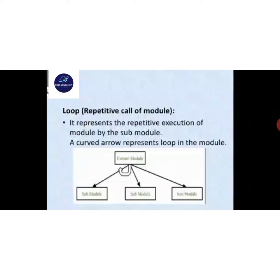A loop represents the repetitive call of a module — the repetitive execution of a module by the control module. A curved arrow represents a loop in the modules, like a while loop or for loop. The control module is divided into three submodules, and the control module repeats itself — this is the looping where a function calls itself.